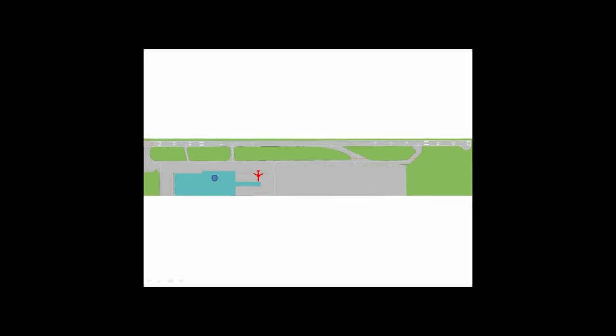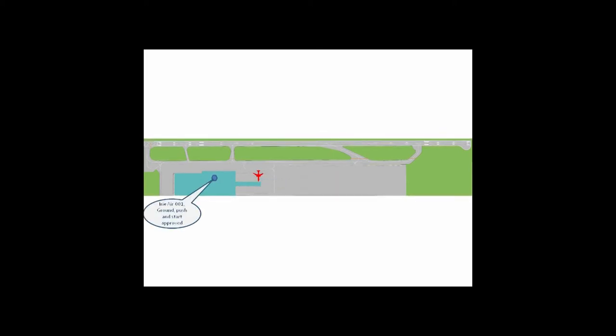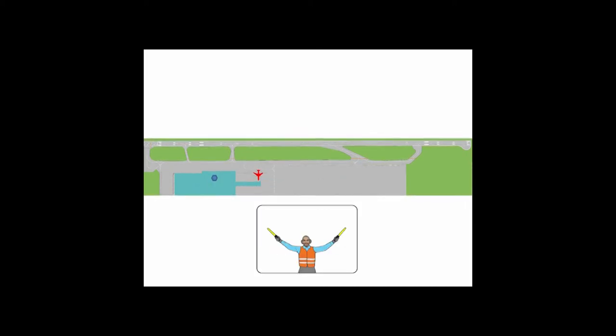Here we have an aircraft parked at a gate. Let's see how the interaction between the pilot and the controllers goes. Ground: 'Iri Air 001, request push and start.' Ground: 'Iri Air 001, push and start approved.' Now that person is a marshaler — that's the gray area where the controller has approved a push, meaning they're approving the aircraft to enter the maneuvering area.